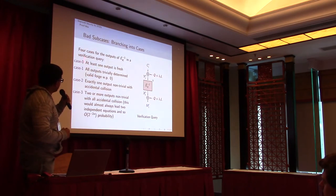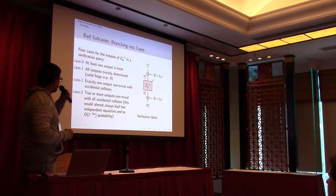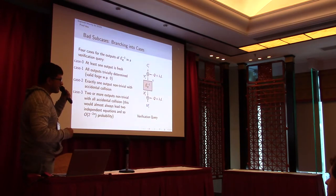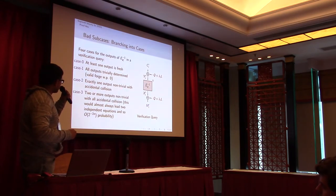So we actually have four cases. Case zero is at least one output is fresh. In that case we have seen the probability is only 1 over 2^n. Case one is all outputs are trivially determined, and in that case it is not bad because that means the attacker is repeating the query, and that is not a valid attack scenario. Case two is exactly one output is non-trivial with accidental collision. Case three is two or more outputs are non-trivial.